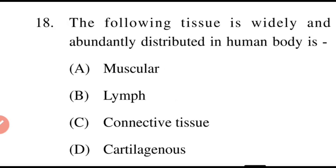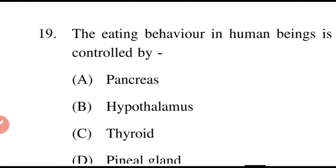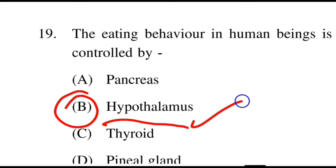Next question: Which tissue is widely and abundantly distributed in the human body? The right option is B, hypothalamus. Hypothalamus resides within the brain, and the brain controls everything.